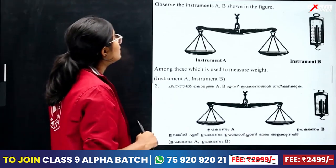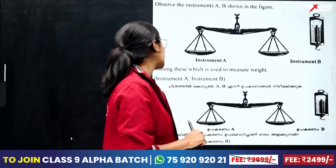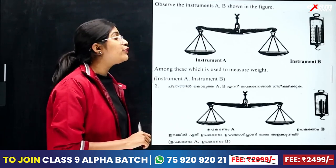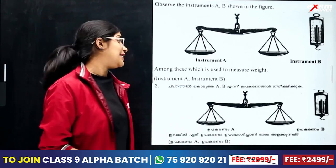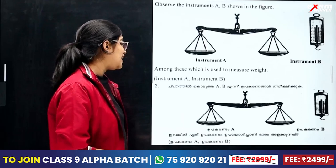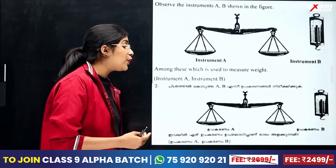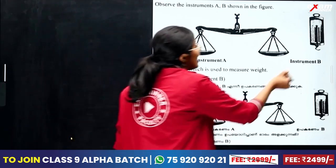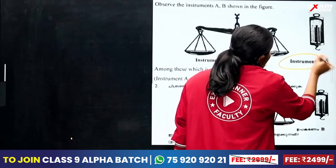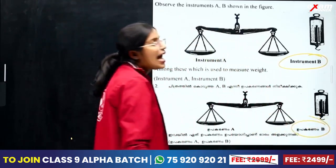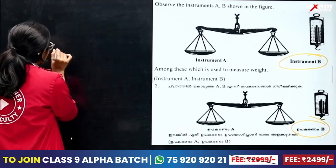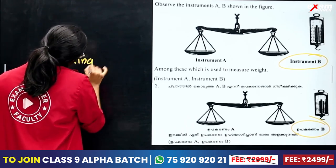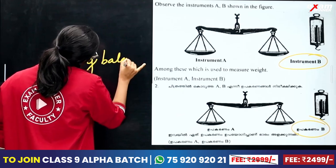Observe the instruments A and B shown in the figure. Among these, which is used to measure weight? We use instrument B, which is the spring balance, to measure weight. Instrument A is the common balance, used to measure mass.